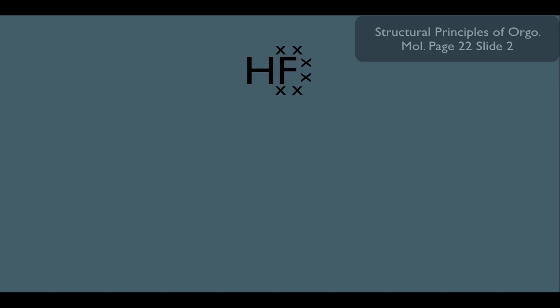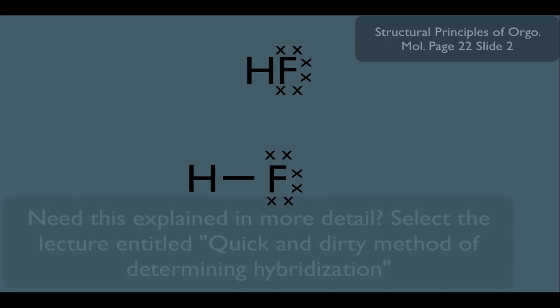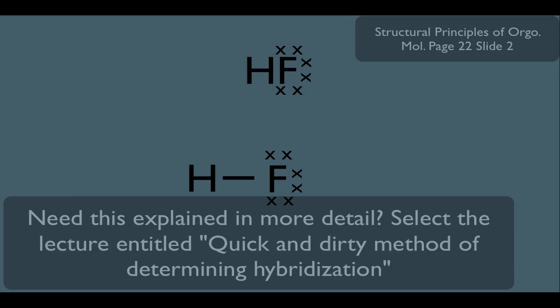Let's first make sense of its bonding by understanding the orbital arrangement of the fluorine in this molecule. This is the Lewis dot structure right here. Let's first determine fluorine's hybridization. We learned in another online lecture how to quickly do this, and that is simply to determine the steric number of fluorine.